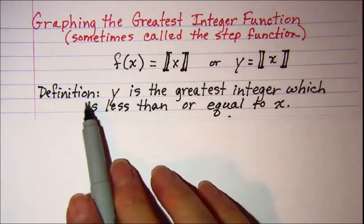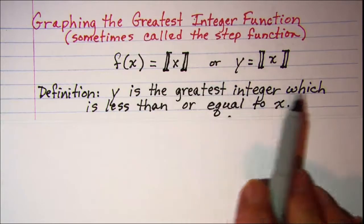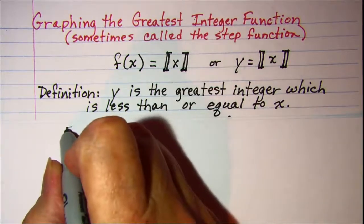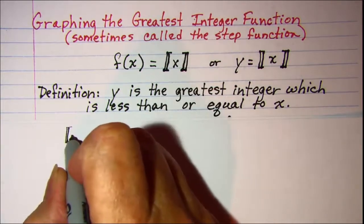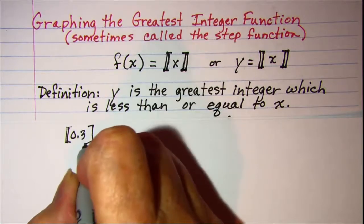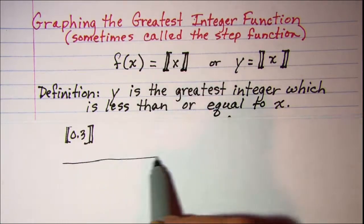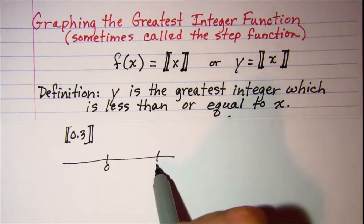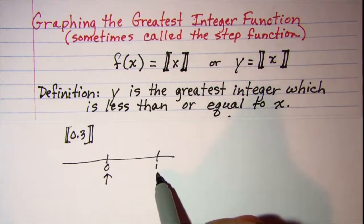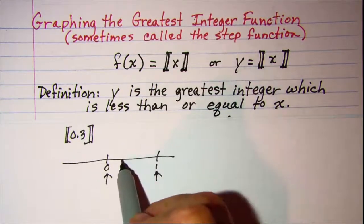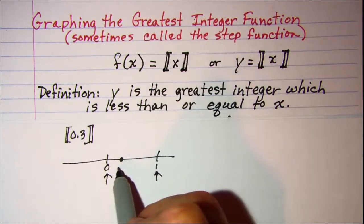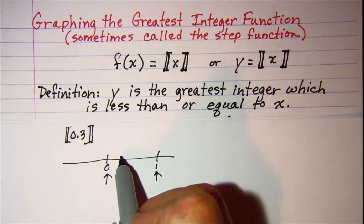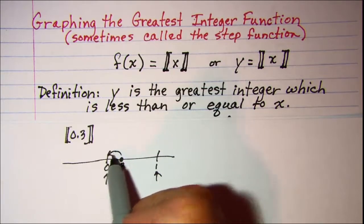The definition is: y is the greatest integer which is less than or equal to x. So if we wanted to find the greatest integer of 0.3, we could look at the number line. Here we have 0 and 1 as our integers, and 0.3 on the number line would be about here. So the greatest integer that is less than or equal to 0.3 would be 0.